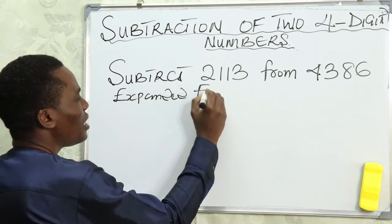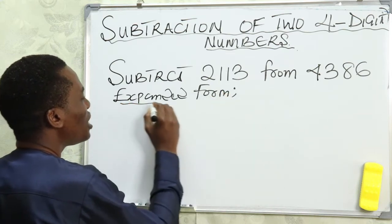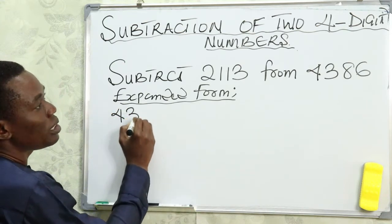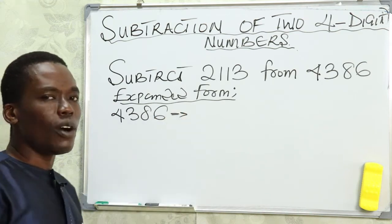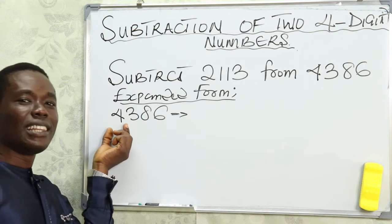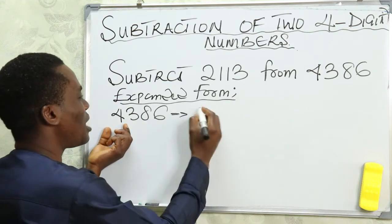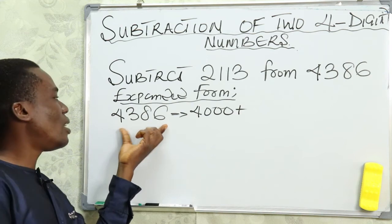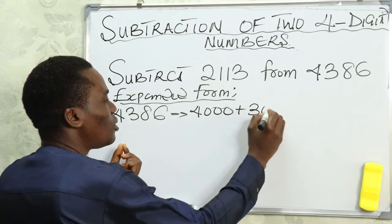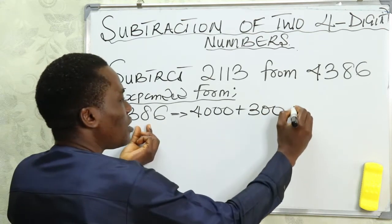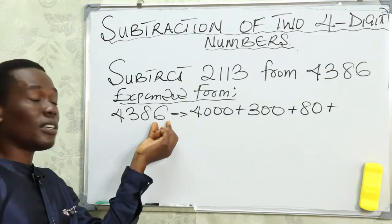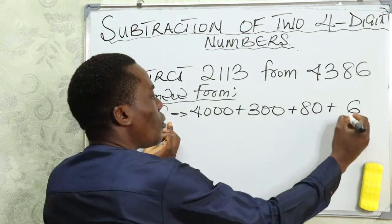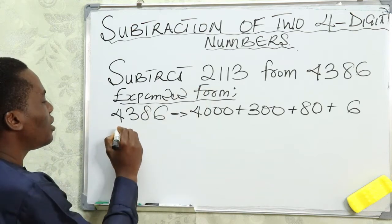The question is: subtract 2113 from 4386. Notice that 4386 is the larger number and 2113 is the smaller number. Let's start with the expanded form method. We expand 4386: four is in the thousands, giving us 4000; three is in the hundreds, giving us 300; eight is in the tens, giving us 80; and six is in the units, giving us 6.